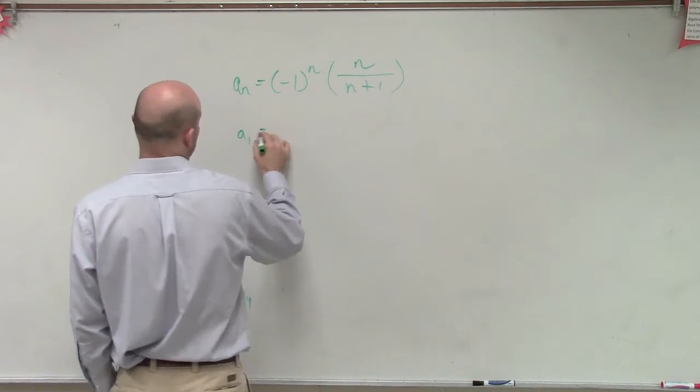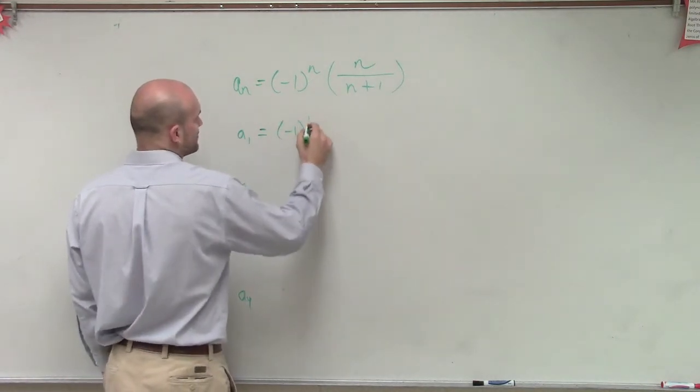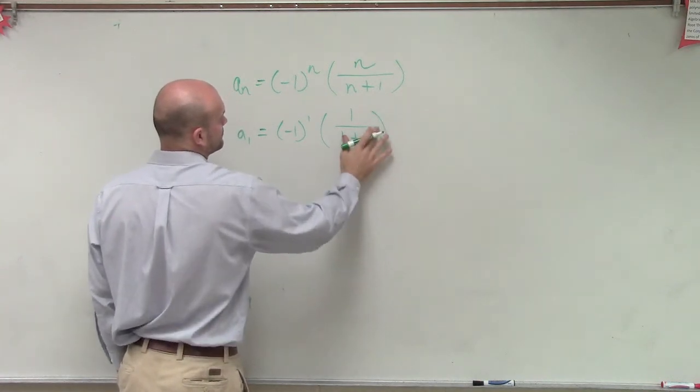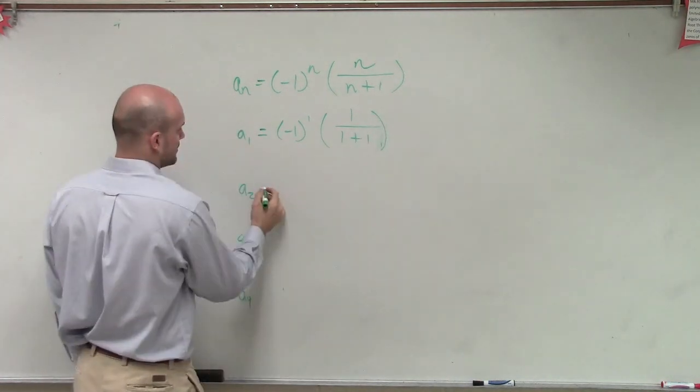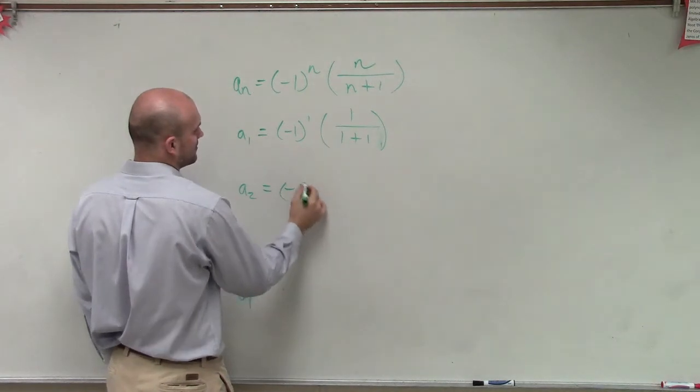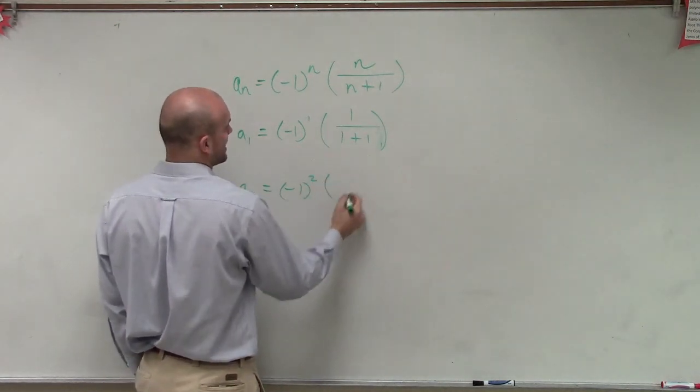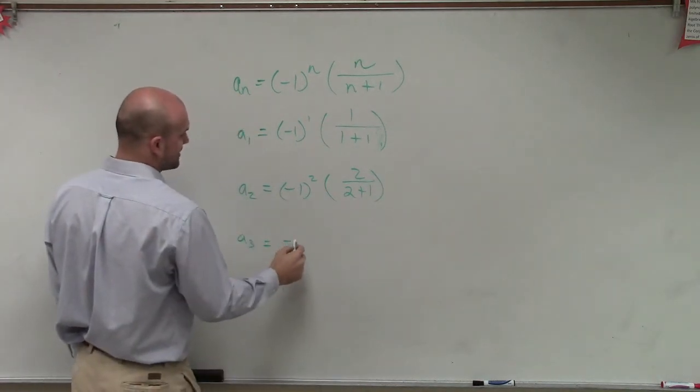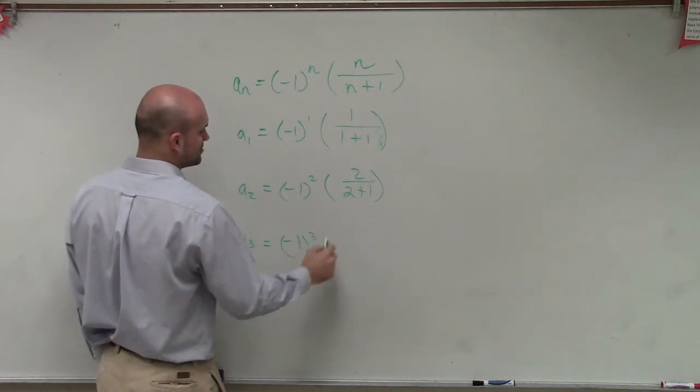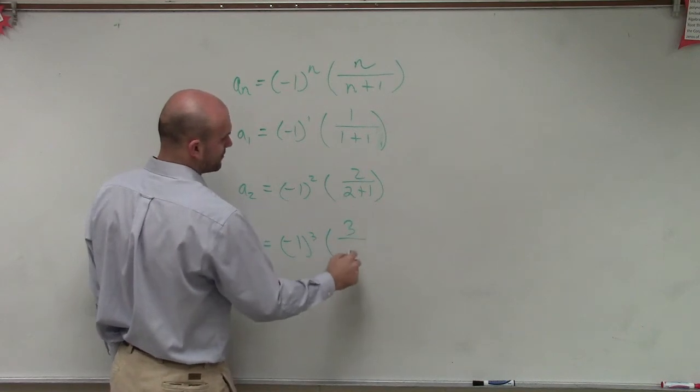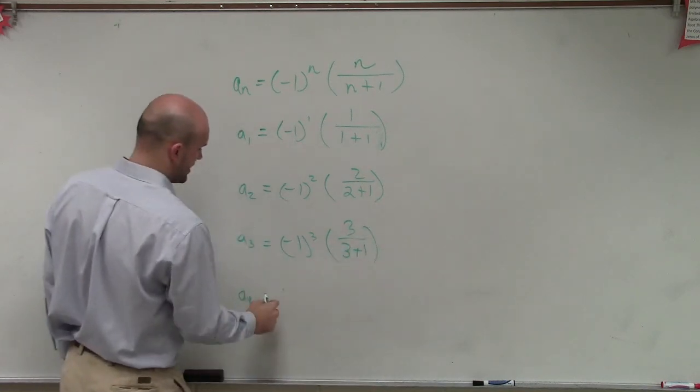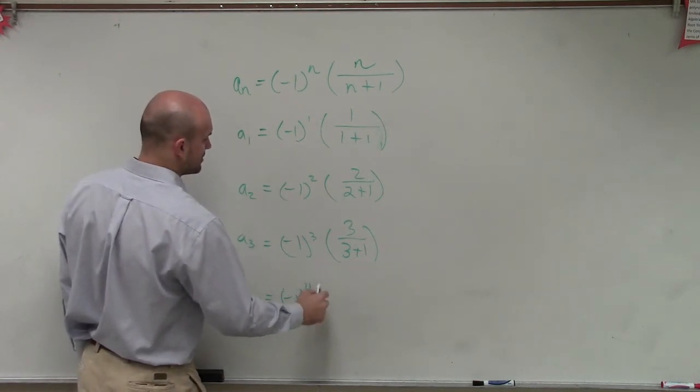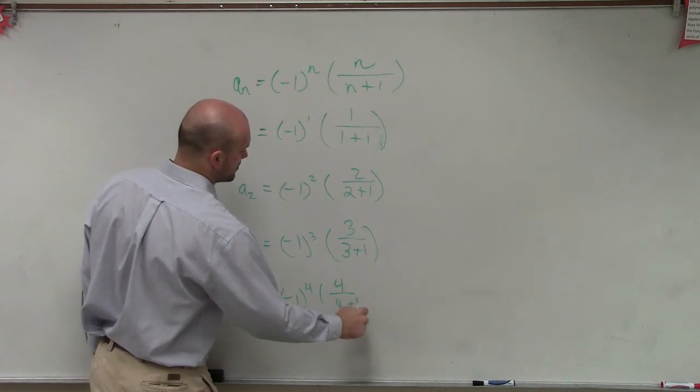So a sub 1, we're just going to simply have negative 1 to the first power times 1 over 1 plus 1. For here, I have negative 1 squared times 2 over 2 plus 1. Here, I'm going to have negative 1 cubed times 3 over 3 plus 1. And over here, I'll have negative 1 to the fourth power times 4 over 4 plus 1.